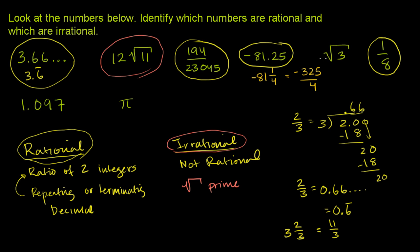Square root of 3, we have the square root of a prime number. It's going to be irrational. 1.097, terminating decimal. This is 1 and 97 over 1,000, so clearly rational.